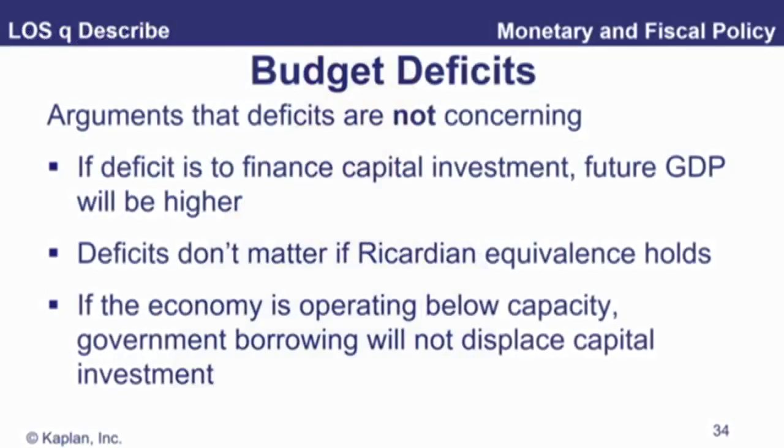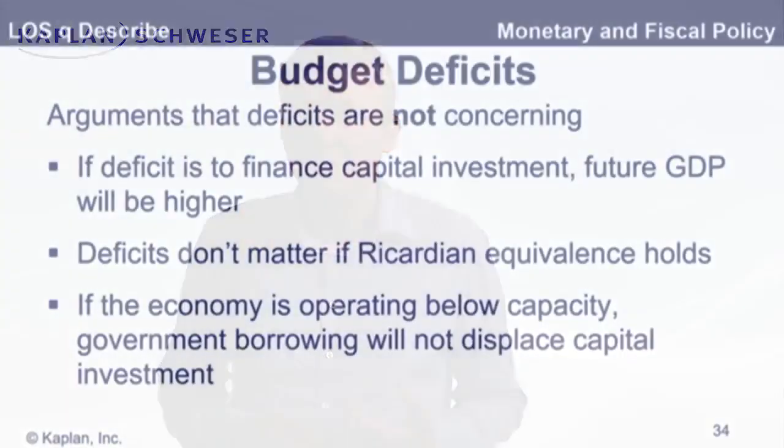Or should we? We have three counter-arguments — this is why it's a great little area for an exam question. Arguments they're not concerning: number one, if it's financing capital investment, future GDP is higher. We are doing capital spending on infrastructure, research, development — that should help future GDP. Secondly, if the Ricardian equivalence holds, then the deficits don't matter because it just offsets. And thirdly, if we're below capacity, we are not going to crowd out — it's not going to happen because we have inexhaustible loanable funds. Just make sure you can see the logic of all of those.